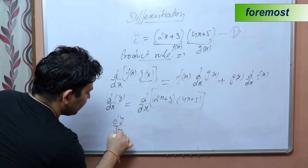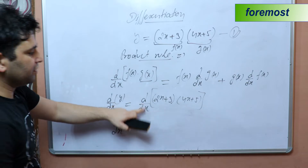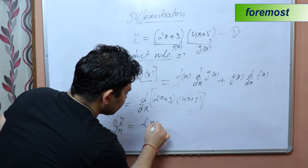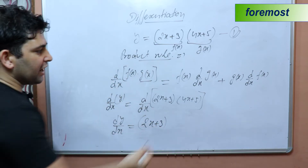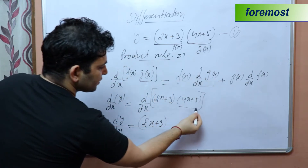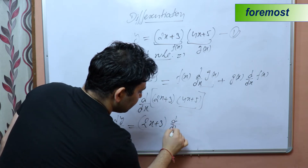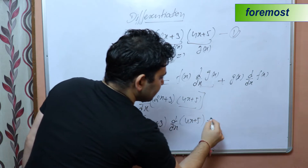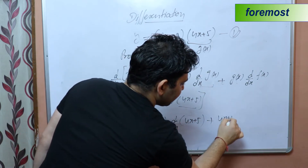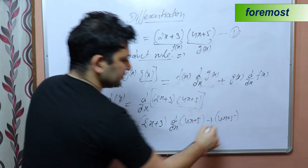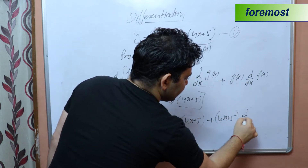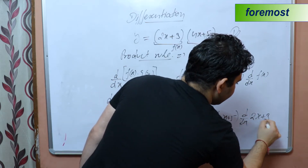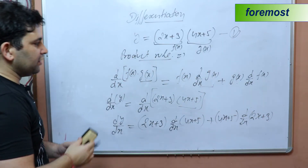Applying the formula: dy/dx equals first function (2x + 3) as it is, multiplied by differentiation of the second function (4x + 5), plus the second function (4x + 5) as it is, multiplied by differentiation of the first function (2x + 3).